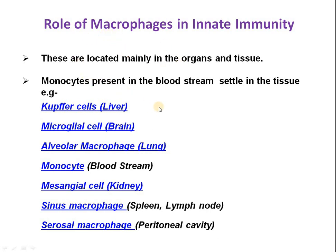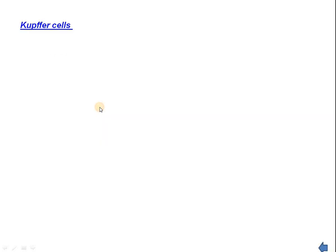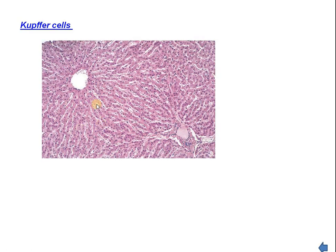Different types of macrophages are distributed in different parts of our body. Number one is the Kupffer cell. Kupffer cells are found in the liver and are the major type of macrophagic cell present in the liver.